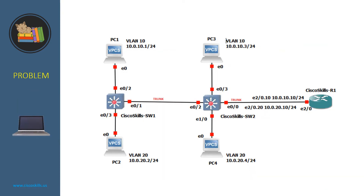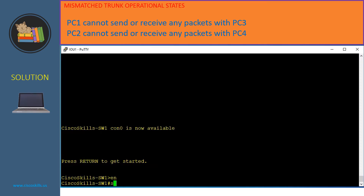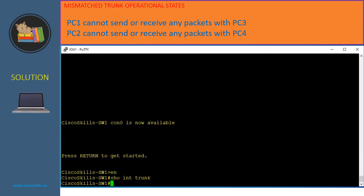In the next problem, PC1 cannot communicate with PC3 and PC2 cannot communicate with PC4, so it must be a problem with the trunk link. To troubleshoot this, we first need to verify if there is any active trunk link on Switch 1. Let's issue the command 'show interfaces trunk'. As you can see, there is no active trunk link on Switch 1.